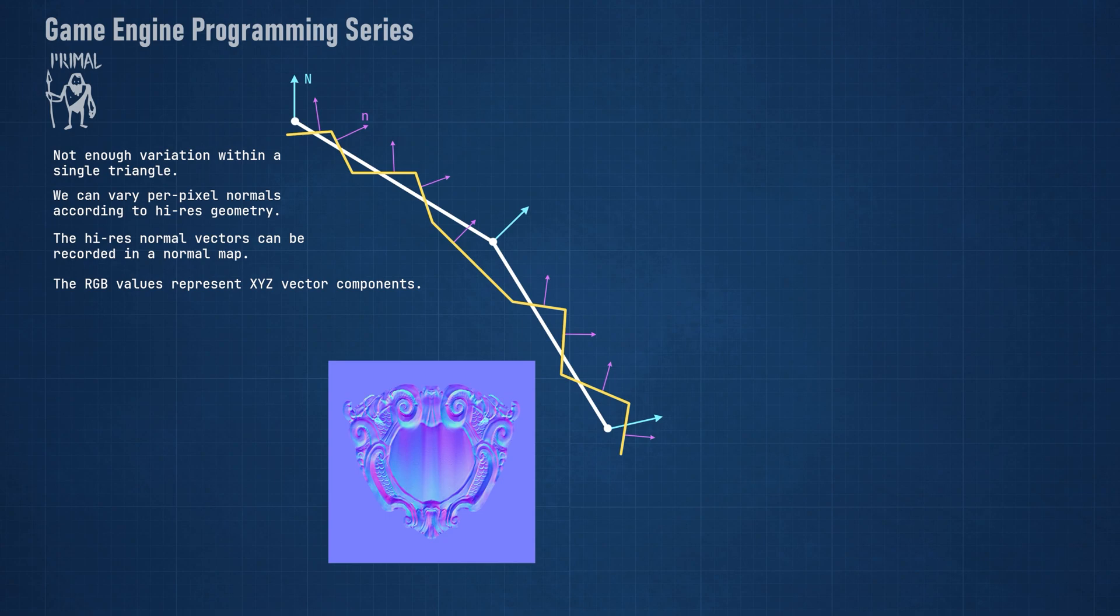In general, normal maps are calculated in the software that was used to create the 3D model, or some texturing application like Adobe Substance Painter. So now we have these vectors, but what coordinate system are they related to?